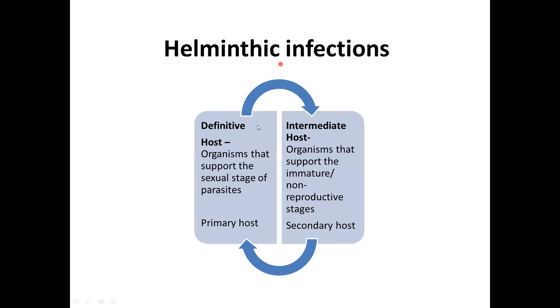Firstly, we need to understand what is the meaning of a definitive host and intermediate host. The definitive host is the one that the organism uses in order to reproduce. Those organisms that support the sexual stages of a parasite are said to be the definitive host. They are also called the primary host.